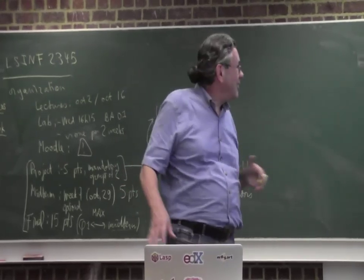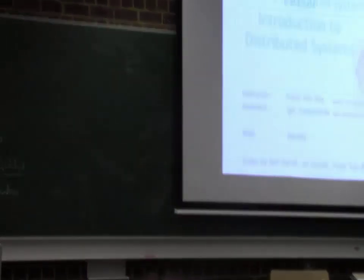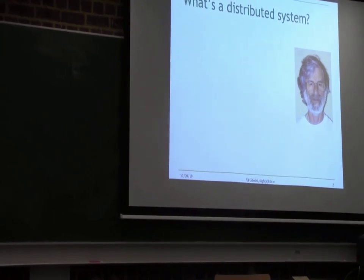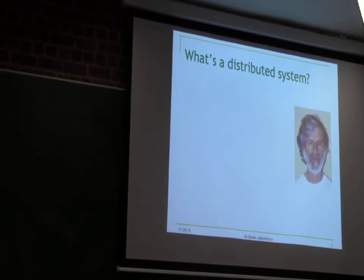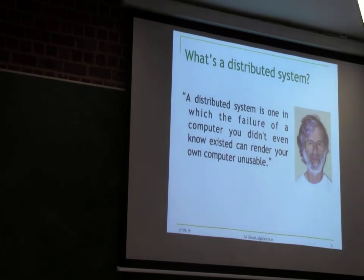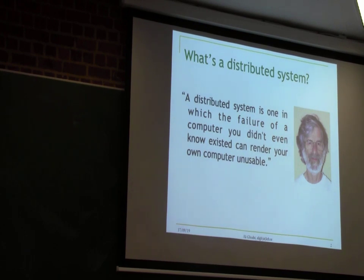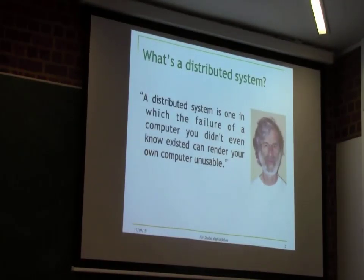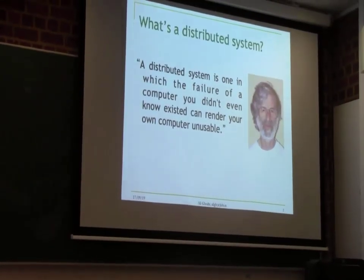We're going to look at the difficult parts of real distributed systems. But today I want to first give you a teaser, an introduction. So first of all, what is a distributed system? This guy made a definition, kind of a funny definition: a distributed system is one in which the failure of a computer you didn't even know existed can render your own computer unusable.